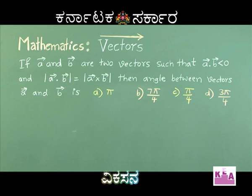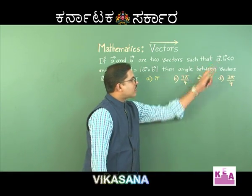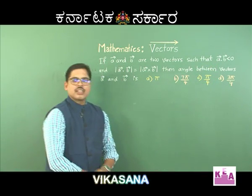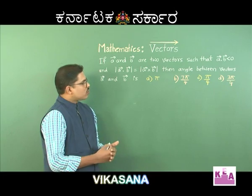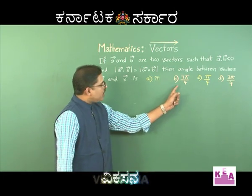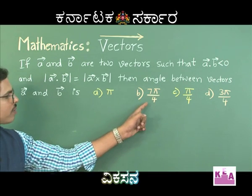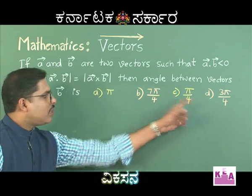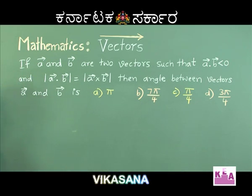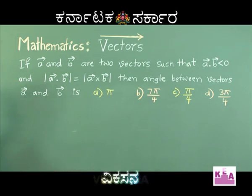Since vector A dot vector B is less than 0, the angle between vector A and vector B is an obtuse angle. So from the options, option B (7π/4) and option D (3π/4) are obtuse angles. From this data, we can reject option A and option C.